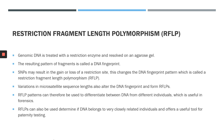When we have variations in microsatellite sequence lengths, this can also alter the DNA fingerprint and form RFLPs. RFLP patterns can therefore be used to differentiate between DNA from different individuals, and this is a very useful tool in forensics. It can also be used to determine if DNA belongs to very closely related individuals, and offers a useful tool for paternity testing.